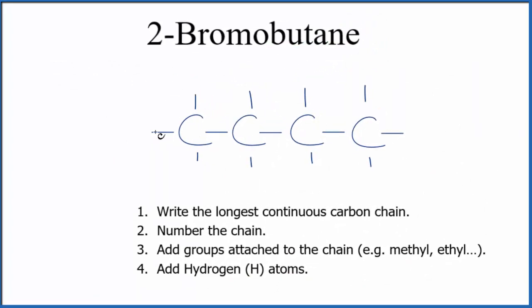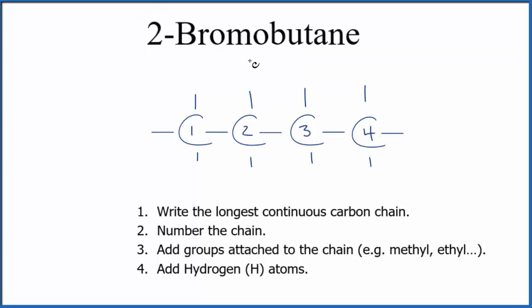Let's number the carbon atoms, number the chain here. So on the second carbon, we're going to have a bromine atom. This is the formula for 2-bromobutane.